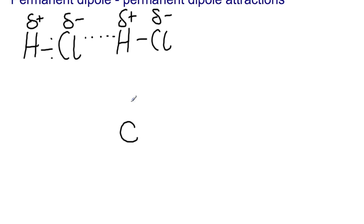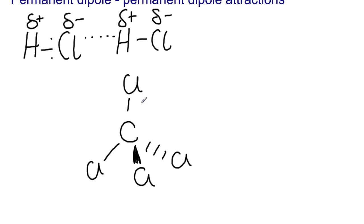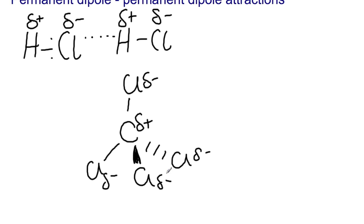An example of a molecule with polar bonds that is not itself polar is carbon tetrachloride (CCl4). It has polar bonds between C and Cl — the chlorines are δ− as they pull bonding electrons towards them, and carbon is δ+. However, because of the symmetrical shape of carbon tetrachloride, it is not a polar molecule and therefore does not have permanent dipole–permanent dipole interactions.